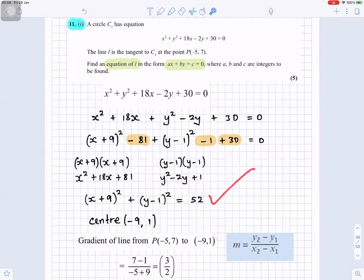So that's the equation of the circle. The center is (-9, 1) and the radius will be square root of 52.